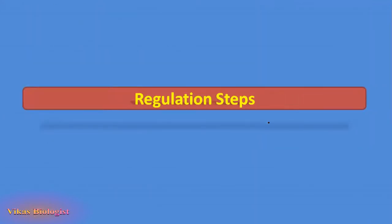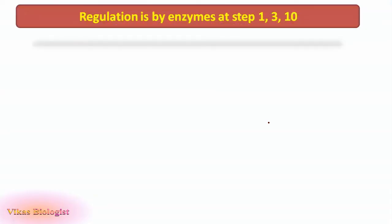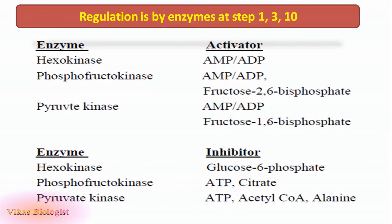Looking into the regulation step of glycolysis, the glycolysis step is regulated by enzymes present at step 1, 3, and 10. The enzymes are hexokinase, phosphofructokinase, and pyruvate kinase. These enzymes regulate the glycolysis process under the influence of activators like AMP-ADP for hexokinase, AMP-ADP as well as fructose 2,6-biphosphate for phosphofructokinase, and AMP-ADP and fructose 1,6-biphosphate for pyruvate kinase. On the other hand there are inhibitors like glucose 6-phosphate which inhibits hexokinase, ATP and citrate inhibit phosphofructokinase, and ATP, acetyl-CoA, and alanine inhibit pyruvate kinase. In this way the glycolysis pathway is being regulated.